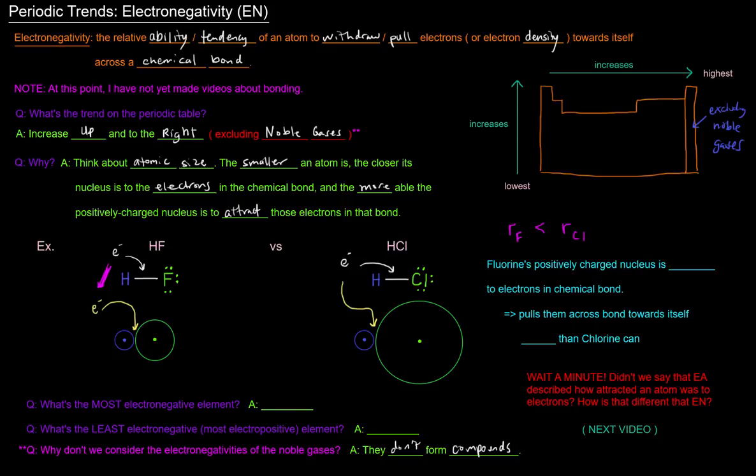And so these nuclei are going to pull on the electrons that are between the two atoms. These guys are going to pull on the electron density between them. Now, how close the nucleus's positive charge is to those electrons is pretty important because electrostatic force is inversely related to the distance between the two charges. So if the two charges are closer, the electrostatic force is greater. So what we will reveal here, if we look at the radius, the radius of fluorine is small compared to the radius of chlorine, which is a little bit bigger. So what happens is that fluorine's positively charged nucleus is closer to the electrons in the chemical bond between it and hydrogen. So it can pull them across the bond towards itself more than chlorine can. And that has a lot to do with its size.